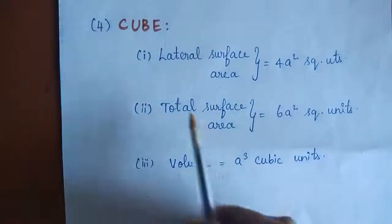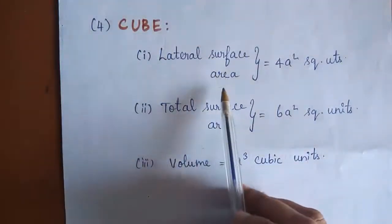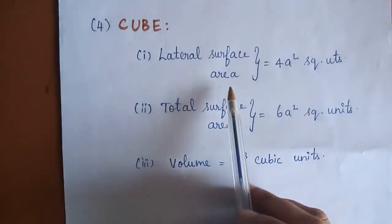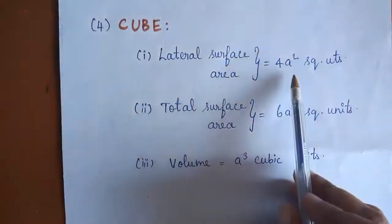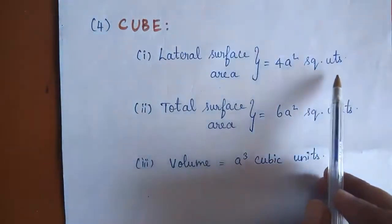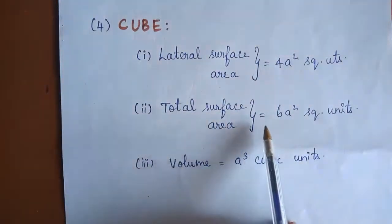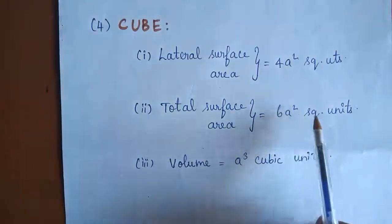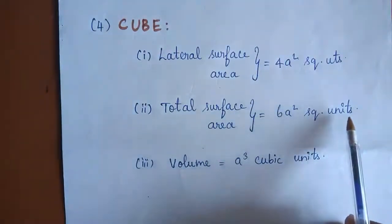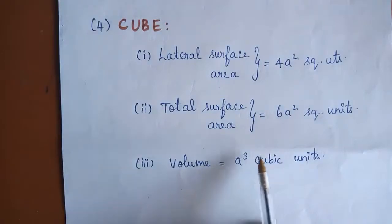Formula 4 is for a cube. The lateral surface area of the cube is equal to 4A square units. The total surface area of the cube is equal to 6A squared square units. The volume of a cube is equal to A cubed cubic units.